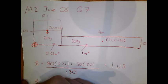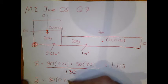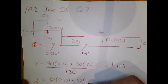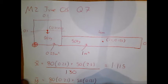And I'll do the same for y bar. I've got 80 lots of 0.25 plus 50 lots of 0.125, all over 130. And this gives me a value of 0.2019.